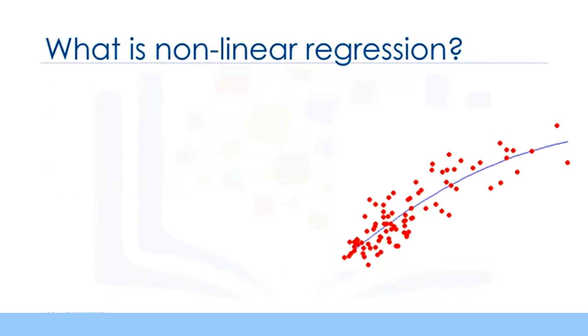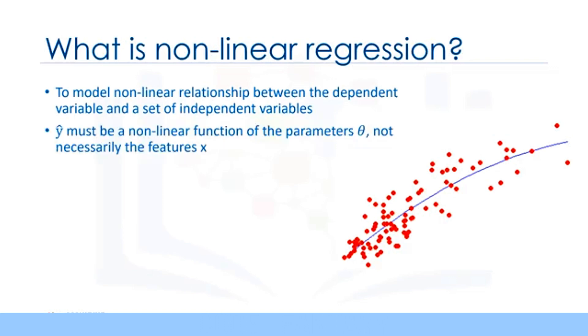So what is nonlinear regression exactly? First, nonlinear regression is a method to model a nonlinear relationship between the dependent variable and a set of independent variables. Second, for a model to be considered nonlinear, y hat must be a nonlinear function of the parameters theta, not necessarily the features X.